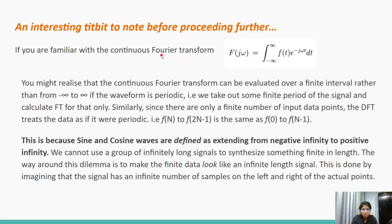This is because the sine and cosine waves are defined as extending from negative infinity to positive infinity. We cannot use a group of infinitely long signals to synthesize something that is finite in length. The way around this dilemma is to make the finite data look like an infinite length signal. This is done by imagining that the signal has an infinite number of samples on the left and right side of the actual points.